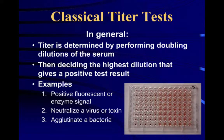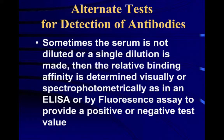We have virus neutralization tests — that's the common gold standard for distemper. We've got fluorescent antibody tests, enzyme immunohistochemical tests, agglutination of bacteria, et cetera. There are also alternate tests for detection of antibodies. Sometimes the serum is not diluted, so there's not really a titer; instead you look at the relative binding of antibody to the antigen. That's done spectrophotometrically, and the readout gives you the intensity of the antibody reaction.